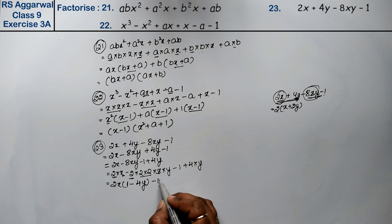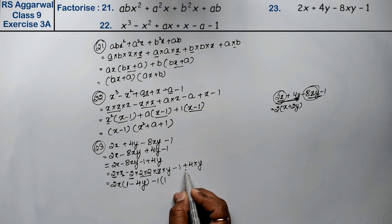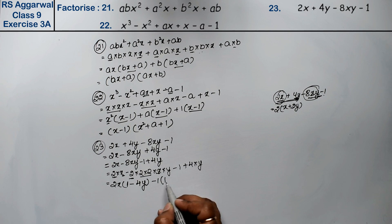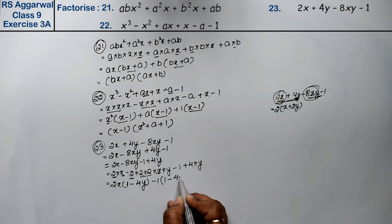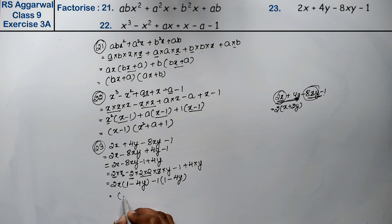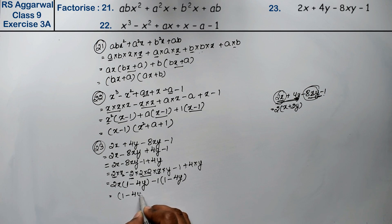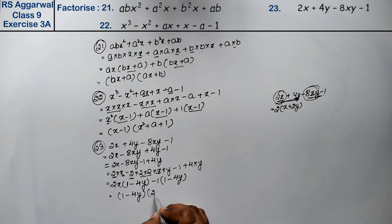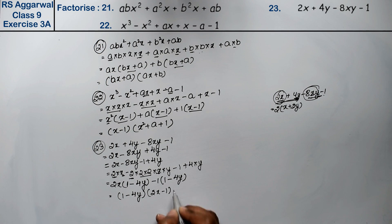We need positive 1, so we take minus 1 as common. The sign changes, and minus 4y becomes plus — wait, it is minus 4y. So 1 minus 4y is common in both groups. The factors are: (1 minus 4y)(2x minus 1). That is the answer.